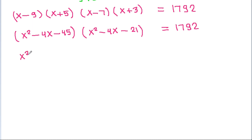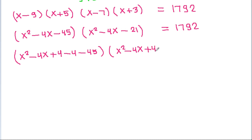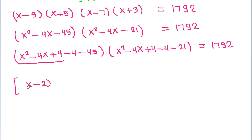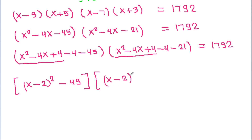We have (x² - 4x) times (x² - 4x). If we add 4 and subtract 4 in each, we get (x² - 4x + 4 - 4) for both terms. So x² - 4x + 4 is (x-2)², and subtracting 4 and 21, we get (x-2)² - 4 and (x-2)² - 21 — giving minus 4 minus 21 equals minus 25 — equal to 1792.